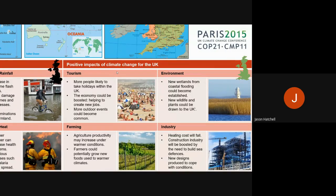Farming is another positive. A good example is grapes in the south east of England — we can now actually grow grapes there, whereas 30 or 40 years ago we couldn't, because temperatures in spring and summer are generally higher than they used to be. Agriculture may actually increase in productivity due to warmer conditions. We now have English wines and English sparkling wines that didn't exist 40 or 50 years ago, because we can now grow those grapes.